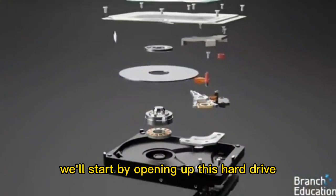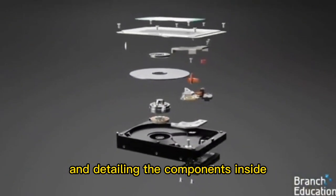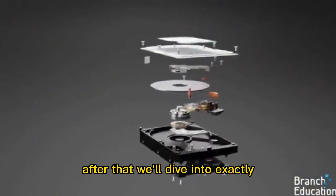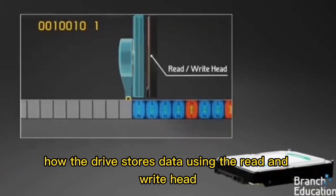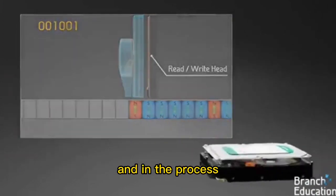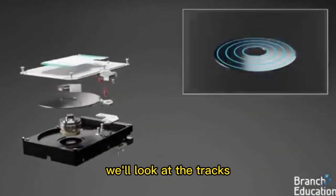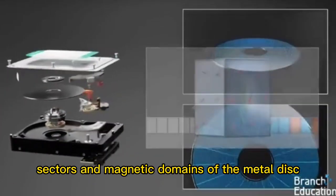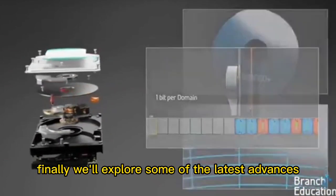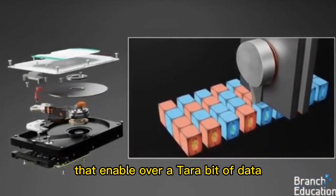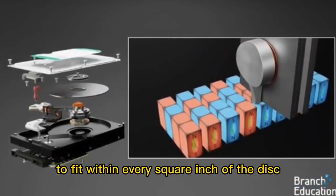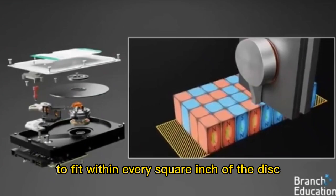We'll start by opening up this hard drive and detailing the components inside. After that we'll dive into exactly how the drive stores data using the read and write head, and in the process we'll look at the tracks, sectors, and magnetic domains of the metal disk. Finally we'll explore some of the latest advances that enable over a terabit of data to fit within every square inch of the disk.